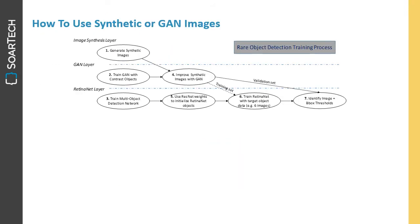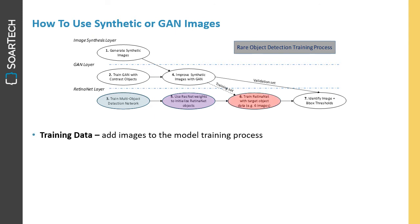How can we use such synthetic or GAN images? We see at least three different methods by which such imagery can be used to support data analysts in finding rare objects in satellite imagery. Assuming we start by training a multi-object detection network like ResNet across the entire XView dataset, we then use the ResNet weights to initialize a RetinaNet model. Additional synthetic imagery can then be used to add images to the model training process, which has been demonstrated in other domains to improve precision and recall. However, in our case we have very little real examples of the object of interest, and so we are concerned that our use of contrast classes may impact the overall utility.